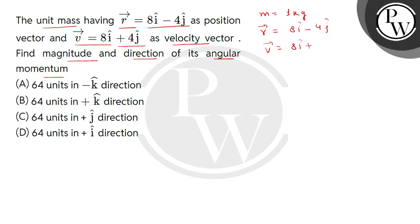Here i cap is a unit vector along x axis and j cap is a unit vector along y axis. We find this angular momentum, the L vector magnitude and direction.